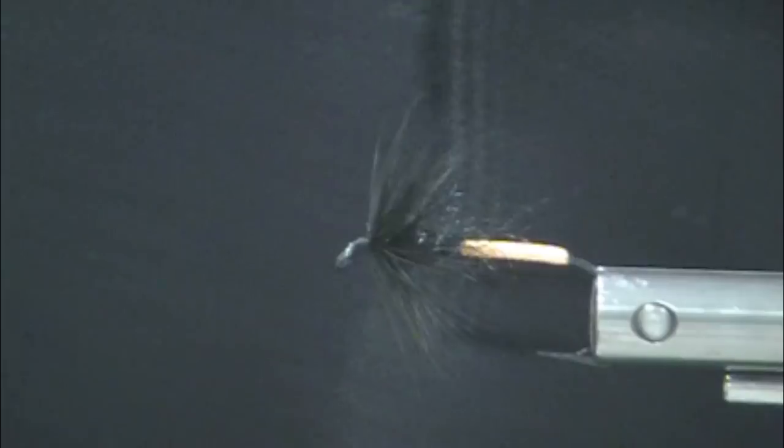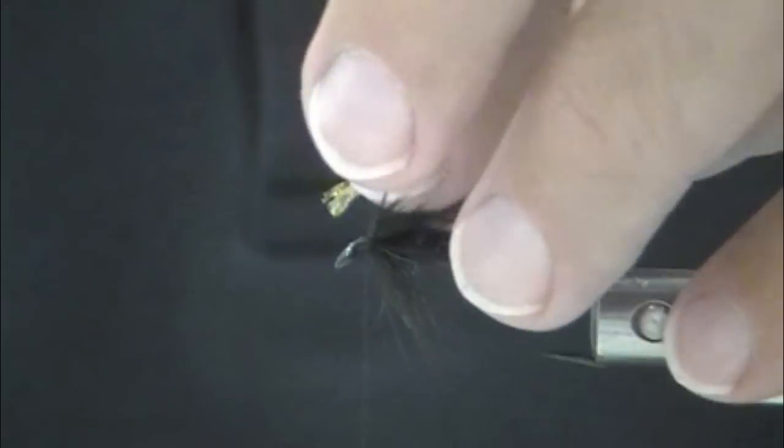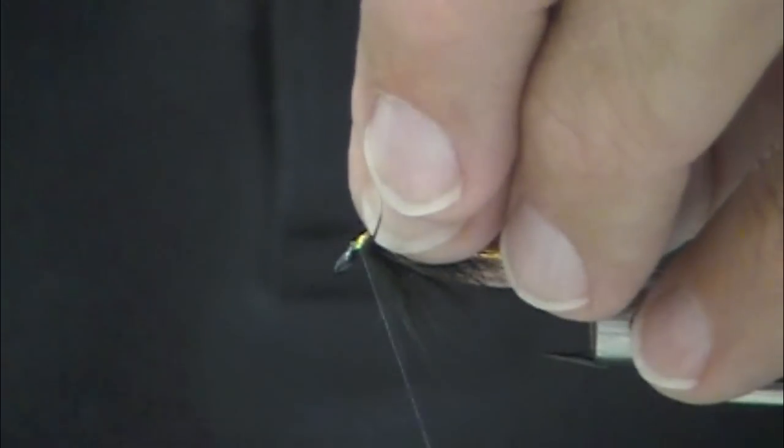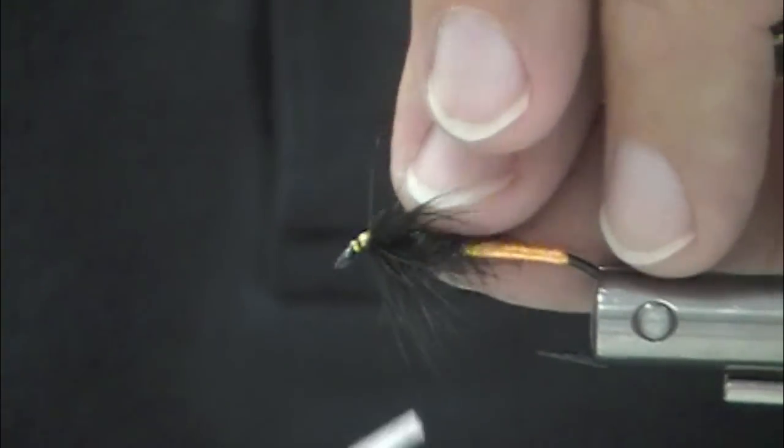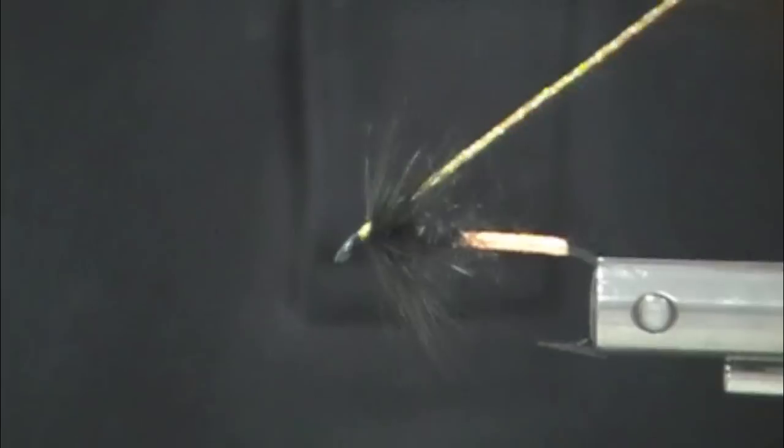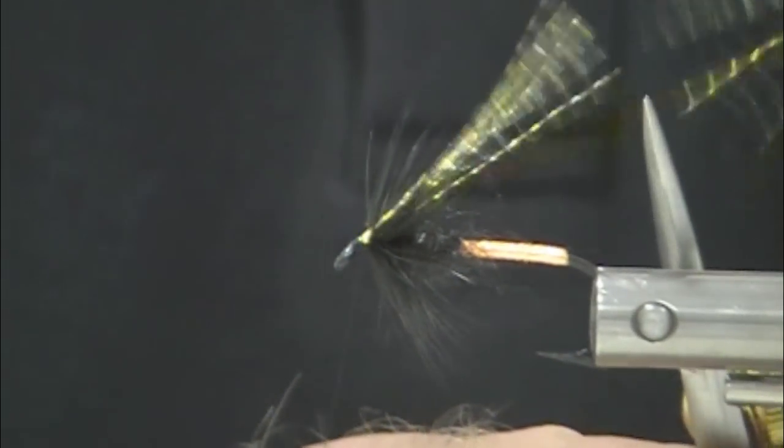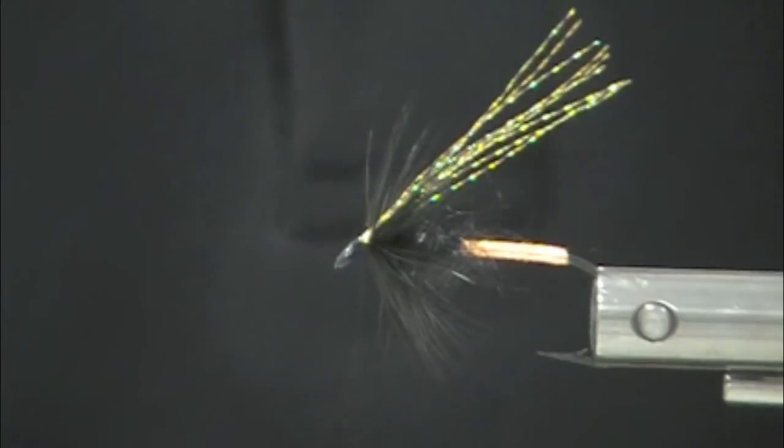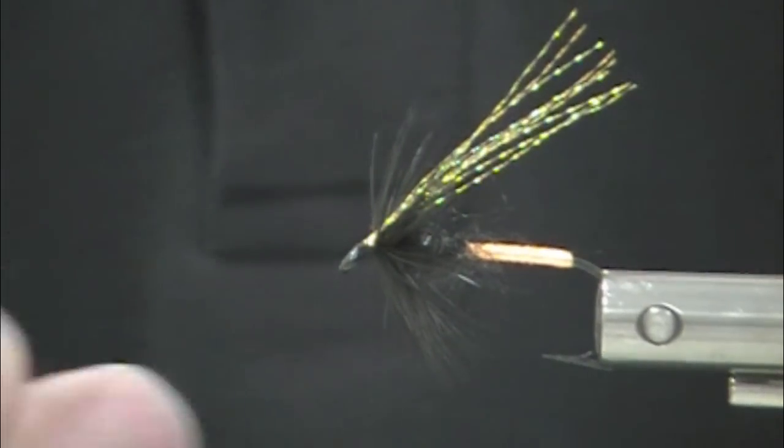Now this little gem right here is going to have a hot orange crystal flash wing. If you've seen the other videos, you're going, Oh my gosh! He actually knows about something other than Raj Flashaboo. I know. It's surprising. But I do.